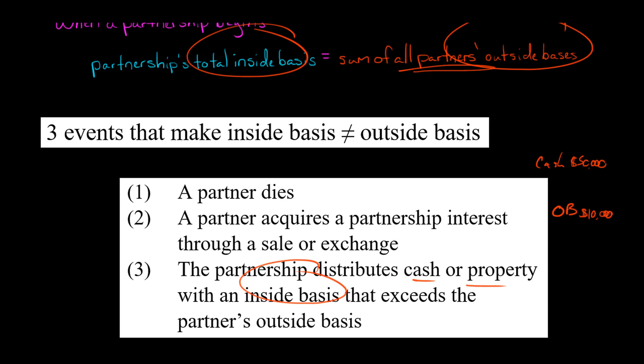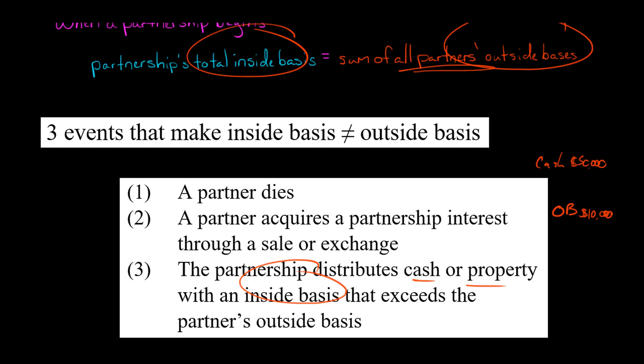...and that partner was given $50,000 cash, then there's going to be a difference because the inside basis of the partnership went down by $50,000 — the partnership gave away assets with a basis of $50,000 — so the inside basis goes down $50,000. But the total outside basis only goes down by $10,000.